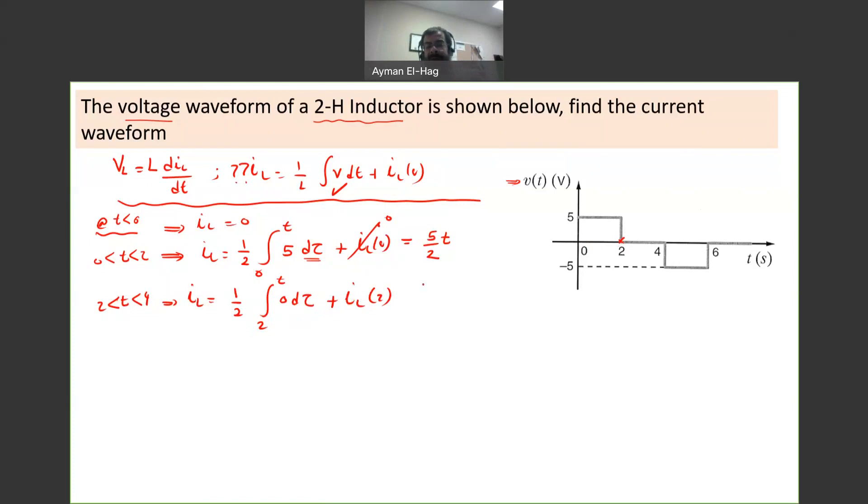IL of 2 can be found from the previous function of the current. So IL of 2 equals 5 over 2 times 2, equal to 5 amps. As a matter of fact, the whole current equals 5 amps. Why? Because there's no voltage, so this is 0. You charge as a linear function, and then there's no voltage, so the current stays constant until you either discharge or further charge.